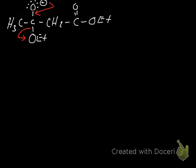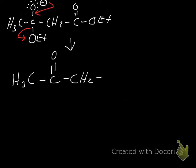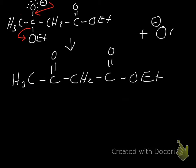After OEt leaves, we have CH3, our reformed carbonyl, CH2, another carbonyl, and OEt. Now things are electrically neutral. But don't forget — we also have an ethoxide ion in solution, because that's where it came from when OEt left with those extra electrons.